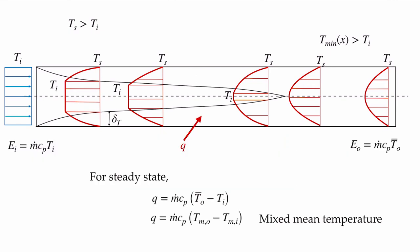We can calculate the energy balance on the whole system. The total thermal energy transferred to the fluid from outside — if the surface temperature is hotter than the interior — is given by the mass flow rate times the heat capacity of the fluid times the mixed mean temperature at the outlet minus the mixed mean temperature at the inlet. The mixed mean temperature is the single temperature you would get if the fluid at a given cross-section were perfectly mixed.